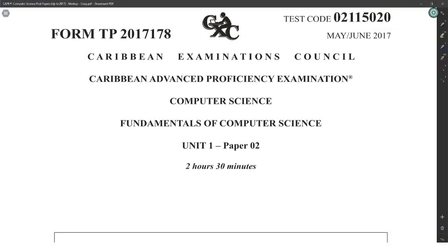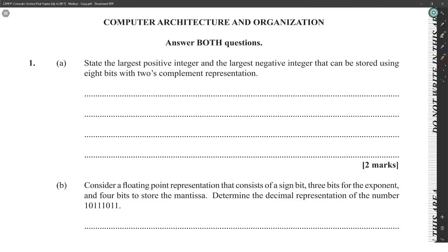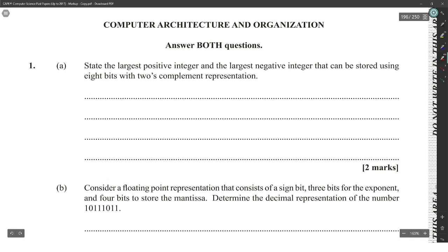This is 2017 paper 2. The first question asks: state the largest positive integer and the largest negative integer that can be stored using 8 bits with two's complement representation. The largest possible integer you could have with 8 bit two's complement is positive 7.